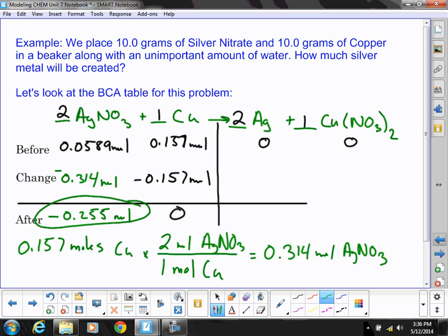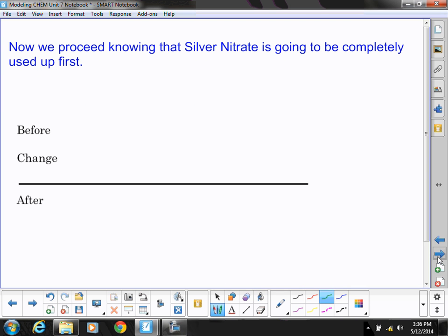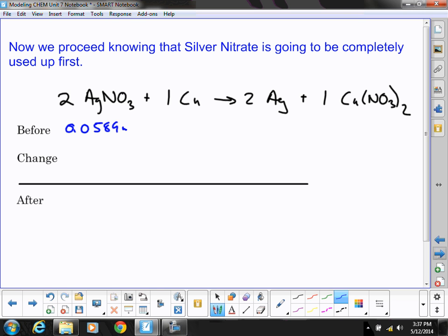I need to instead look at the reaction with all the silver nitrate being completely reacted. So let's reset this question and go from there. So a balanced chemical equation, I'll just rewrite it here. 2AgNO3 plus 1 copper yields 2Ag and 1Cu(NO3)2. And it started with 0.0589 moles here and 0.157 moles. 0 and 0.